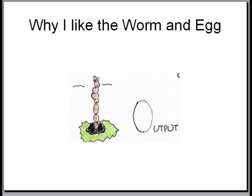This is why I like to use the worm and the egg. If you straighten out the worm it can turn into an I for an input and the egg which shows the processing is the output and it can be turned into an O.